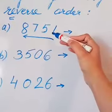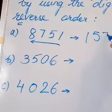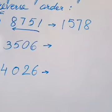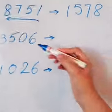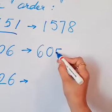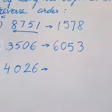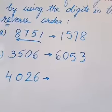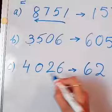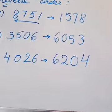So we will write 1, then 5, then 7, and lastly 8 — giving us 1578. Similarly, the second question: 6, then 0, then 5, and lastly 3 — giving us 6053. This is how we go in reverse order. And 6204 gives us 6204. Thank you.